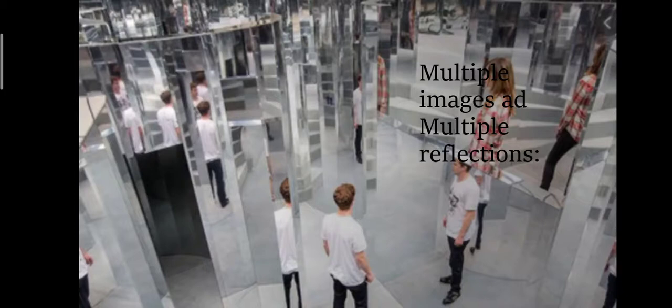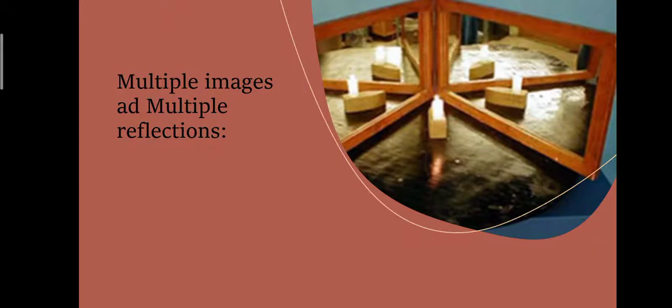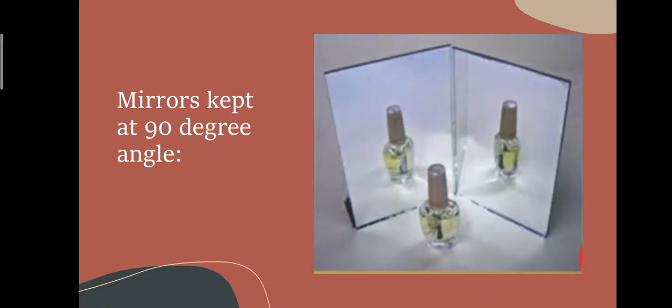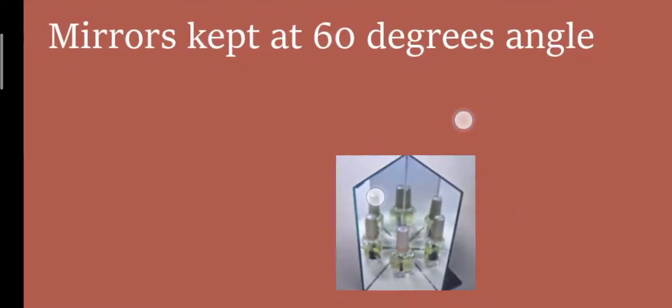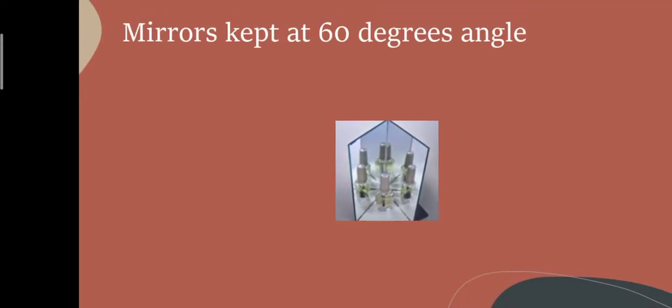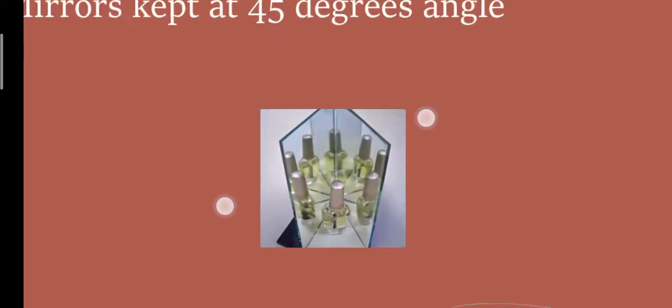Moving ahead, we will talk about multiple images and multiple reflections. When multiple mirrors are placed together, multiple images are formed. How many images form depends on the angle between the mirrors. If the angle is 90 degrees, there are two images formed. If the angle is 60 degrees, you can see up to five images. When the angle is made smaller, the number of images increases — at 60 degrees you can count up to eight images.